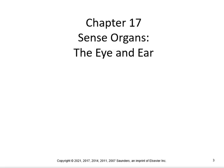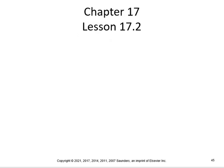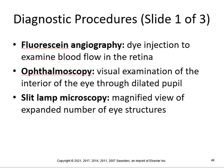Let's continue with part two. There are some diagnostic procedures that you can do for the eye. You can do a fluorescein angiography, which is a dye injection to examine blood flow in the retina. You can do an ophthalmoscopy, a visual examination of the interior of the eye through a dilated pupil. You can do a slit lamp microscopy, which is a magnified view of a number of eye structures.